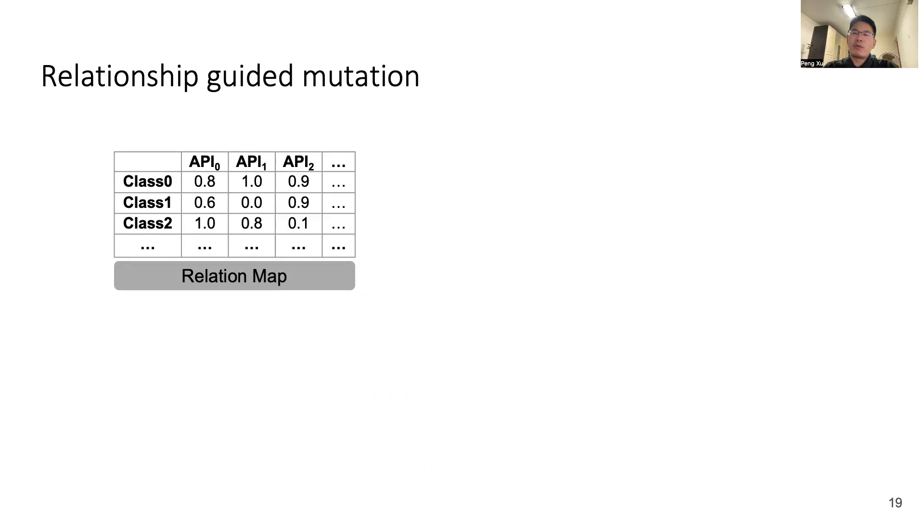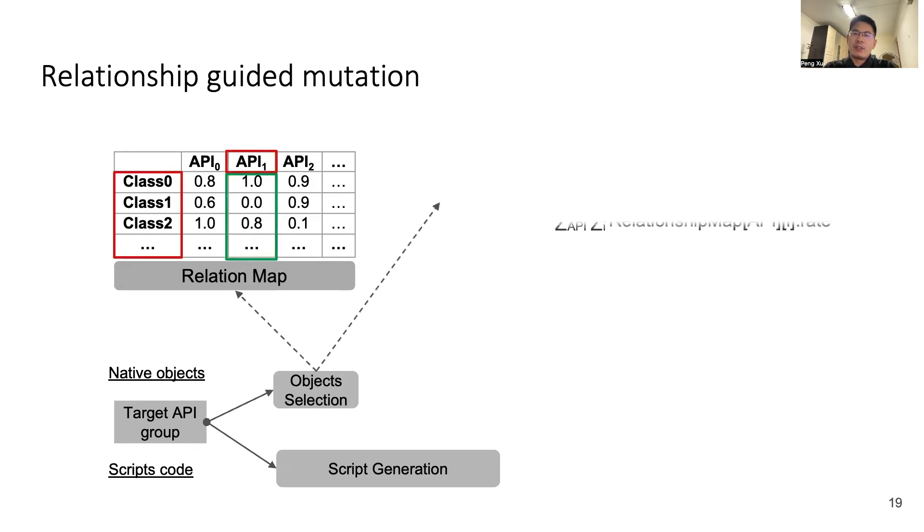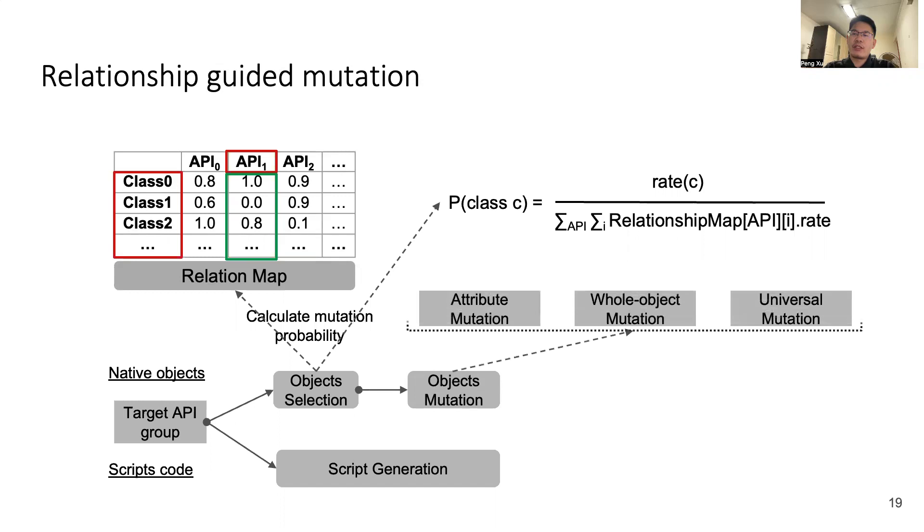In the second part of our solution, we have got a relation map between object classes and scripting API. In this part, we will utilize the relation map to guide mutation. First of all, we determine a target API group. Then, we use a traditional method to generate script code. For native objects, we get a seed sample and select objects in this sample for mutation. Specifically, we refer to the relation map and design an algorithm to calculate the mutation probability for each object in the seed sample. In general, the mutation probability is positively correlated with the strength of relationship. Then, we select some objects with mutation probability and mutate the selected objects in three mutation strategies. Finally, we synthesize the mutated sample and script code together and produce a final input. So that's all of our solution.